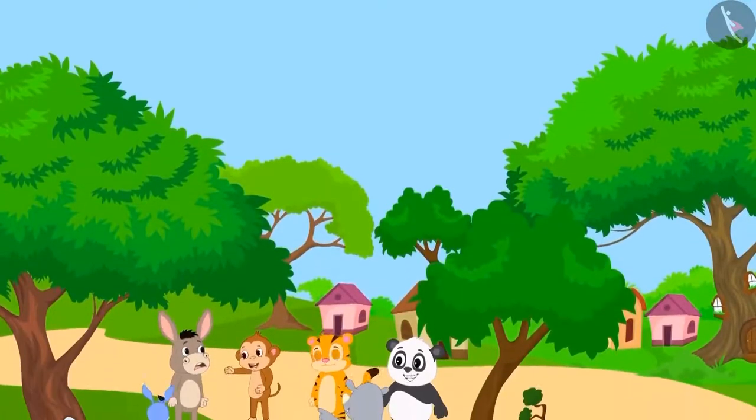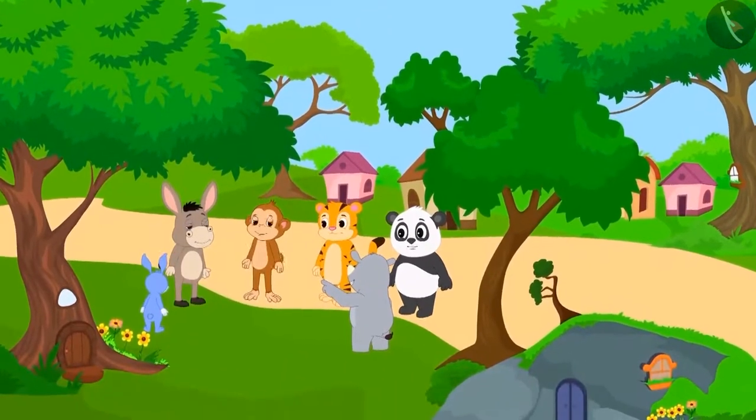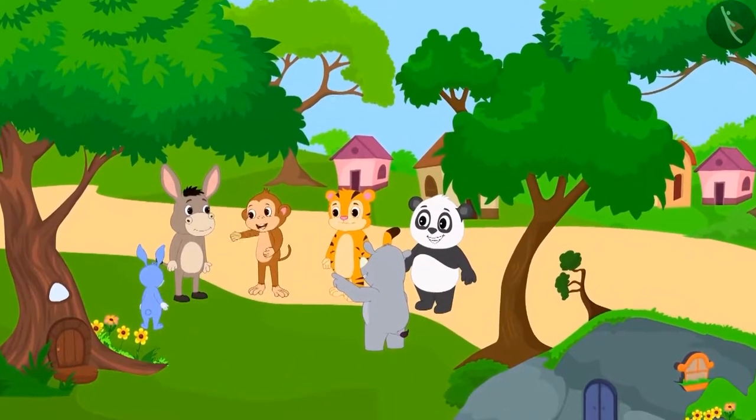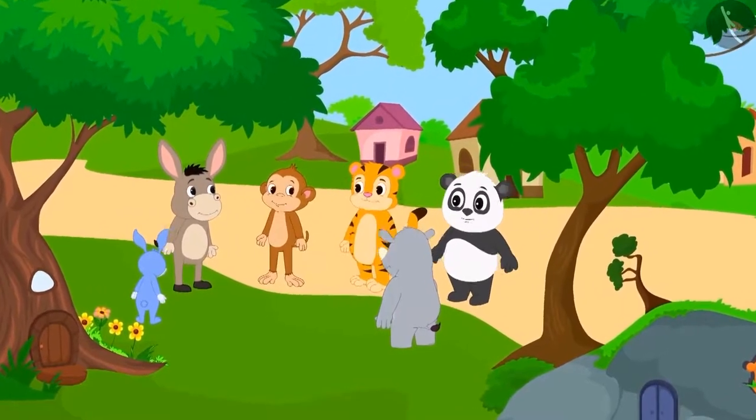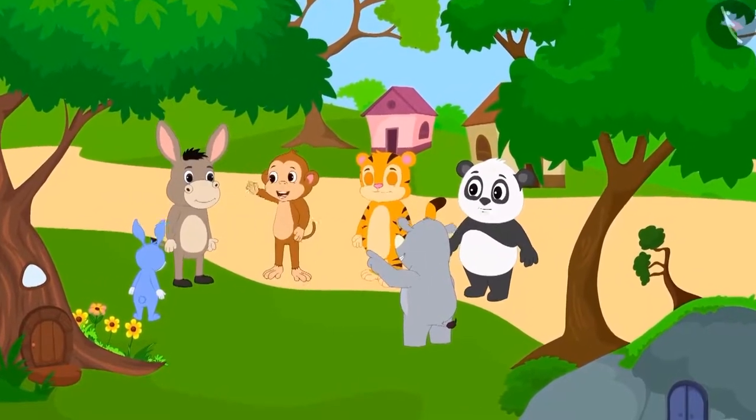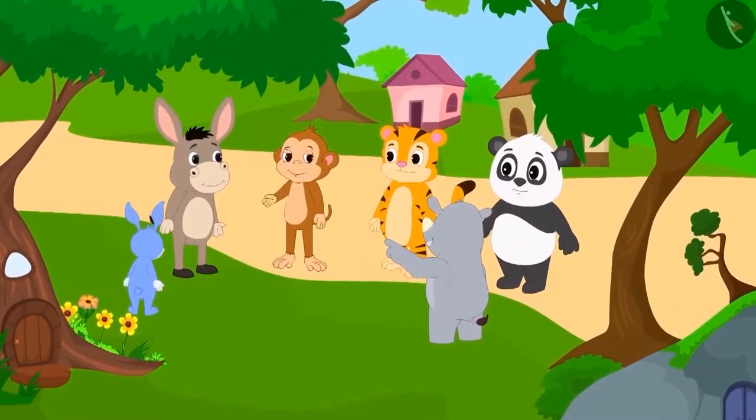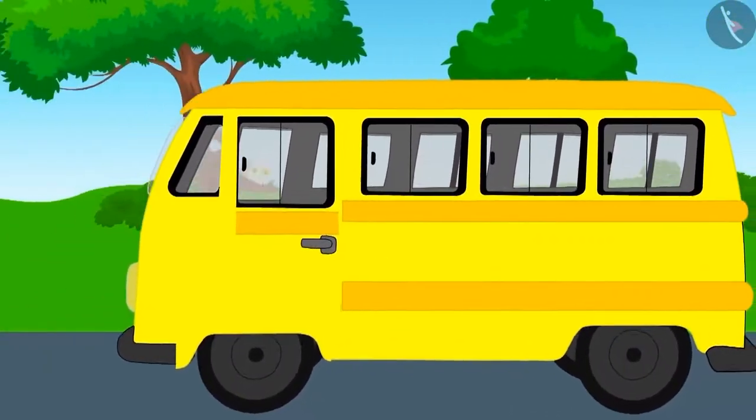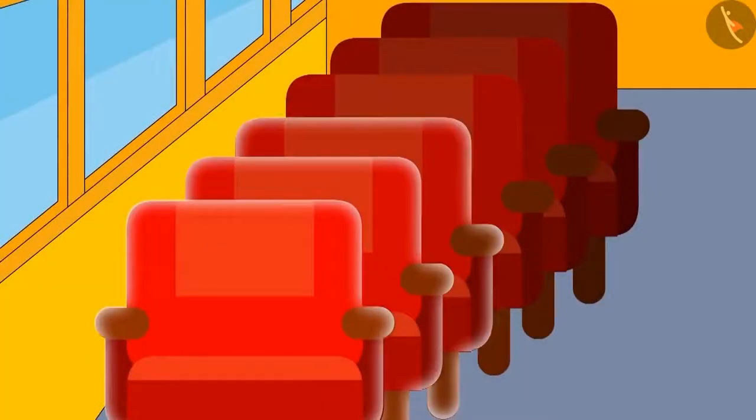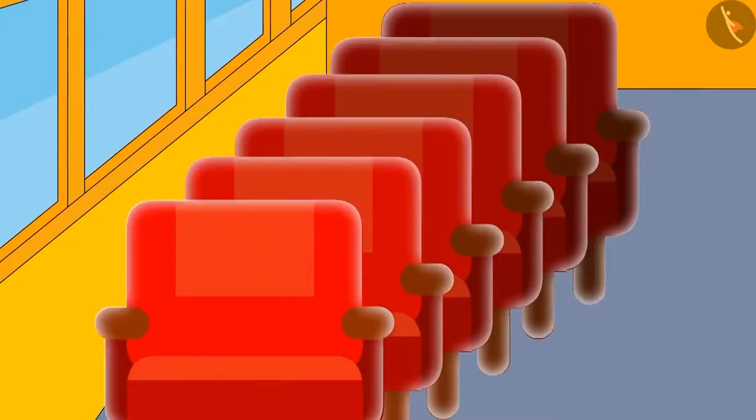People from Champapur are making plans to go on a picnic. They have to arrange for some buses for the picnic. The seating should be such that the number of people sitting in every row is equal. The first bus operators sent a bus in which only one person can sit in a row.